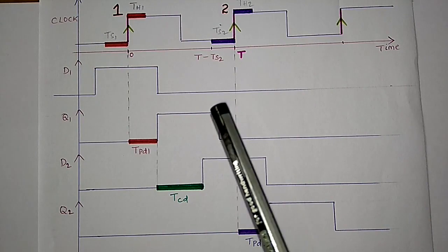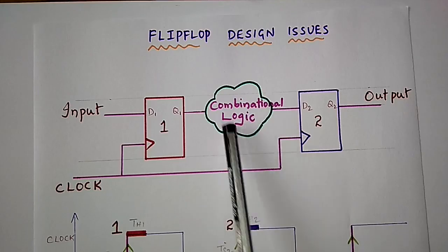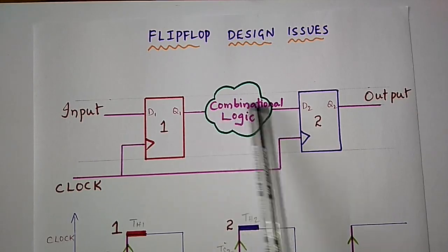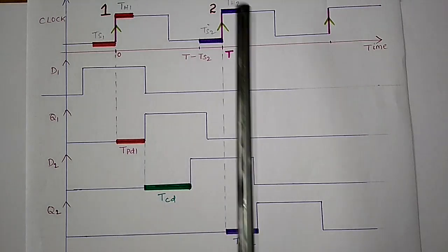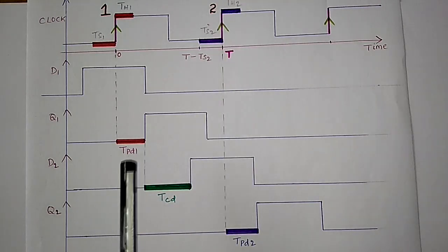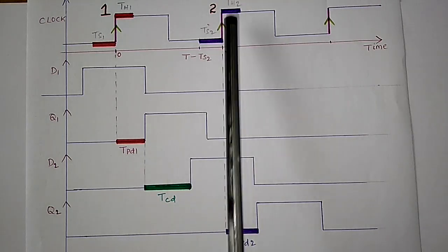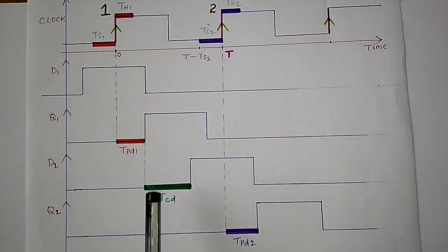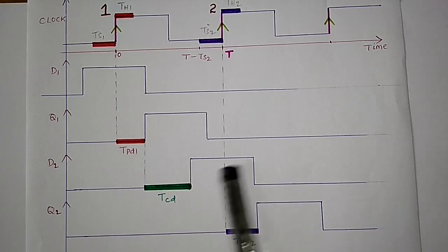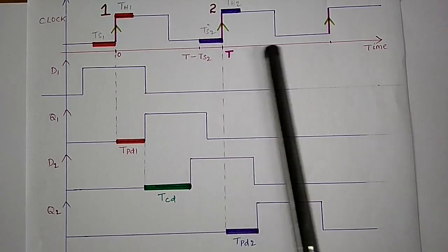If there is no combinational circuit delay then TPD1 should be greater than TH2. If TPD1 is less than TH2 change in input happens during hold time and then it results in hold time violation. By this analysis one can note that hold time violation can be fixed by introducing delays in the data path.